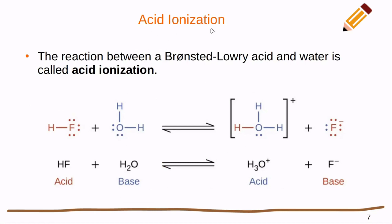Let's talk about what an acid ionization reaction is. Acids and bases only make sense in the context of water — these reactions only happen in water. The reaction between a Bronsted-Lowry acid and water is called acid ionization. In our case, HF gives a proton to water, which is now acting as a base, to form the hydronium ion and a free fluoride ion. We never actually have free protons in solution, because water is always present as the solvent and will always accept that proton to form the hydronium ion.